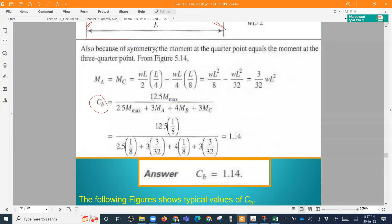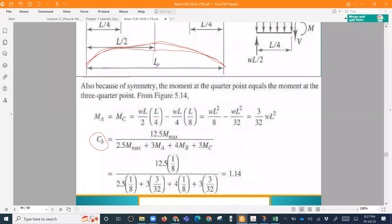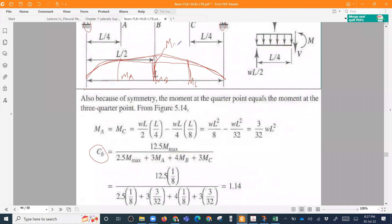M B is the middle point moment. This is my M B. This is M C. And this is M A. And the maximum moment is this. For example, this is the maximum moment. So M B and M max are the same.